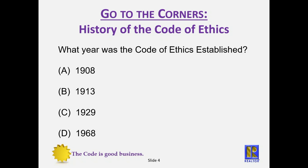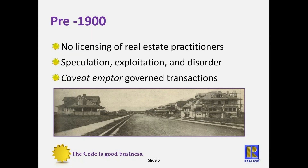So what year was the code established? The answer is B. Before the 1900s, early in the 1900s, before we had anything, there was no licensing of real estate practitioners. There was speculation, exploitation, and disorder, and caveat emptor governed transactions.